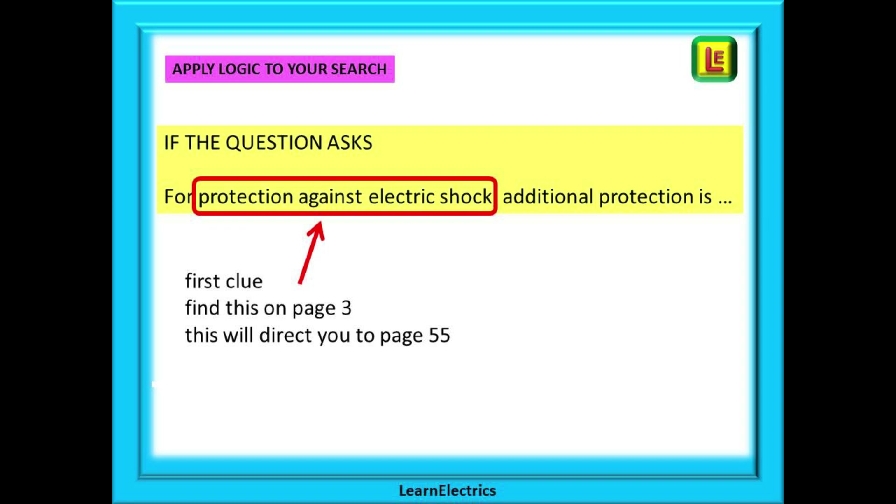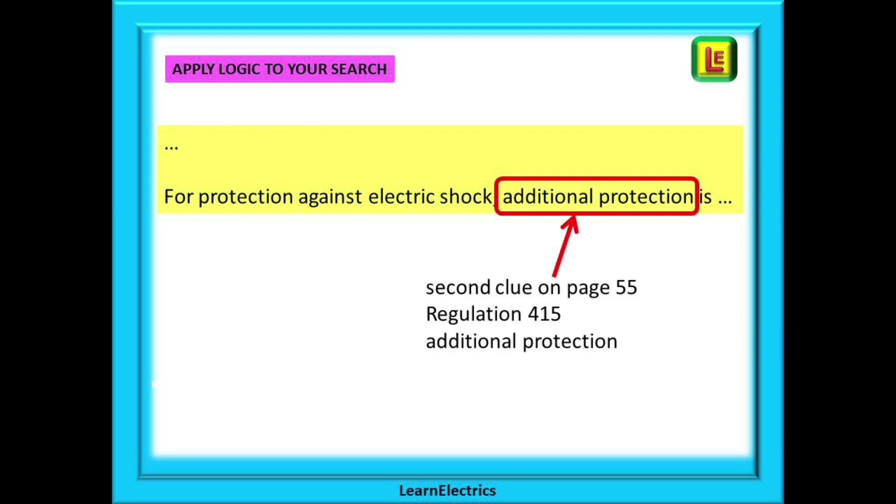How do contents pages work? If a question began 'for protection against electric shock, additional protection is?' Well, our first clue is the words 'protection against electric shock,' and on page 3 we find that this is Chapter 41 and then we are directed to page 55. The second clue is found on page 55. Scanning down the chapter contents page, we find an entry for additional protection and this tells us the answer that we seek might be in regulation 415. It is now an easy matter to find the answer in the half a page that makes up regulation 415.